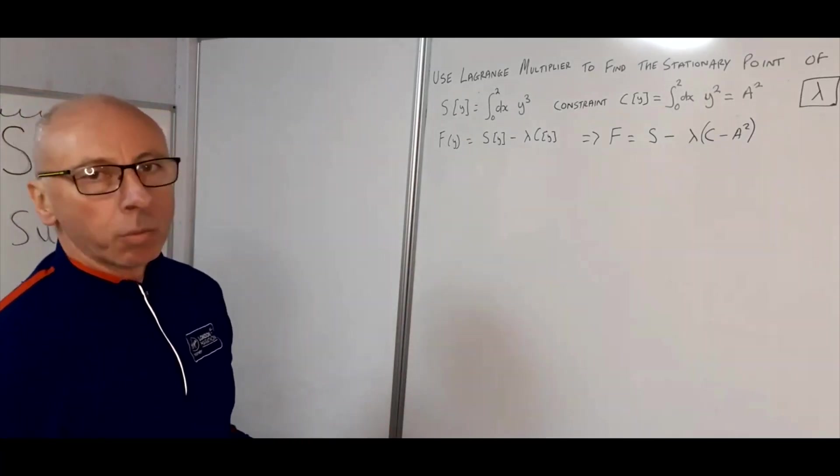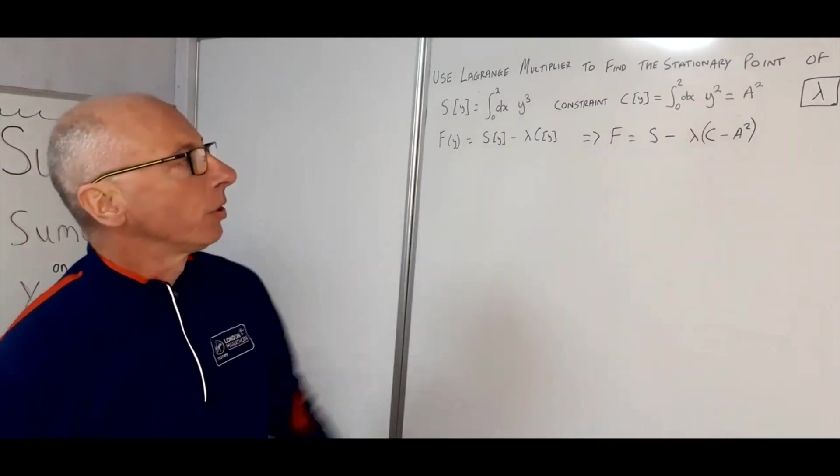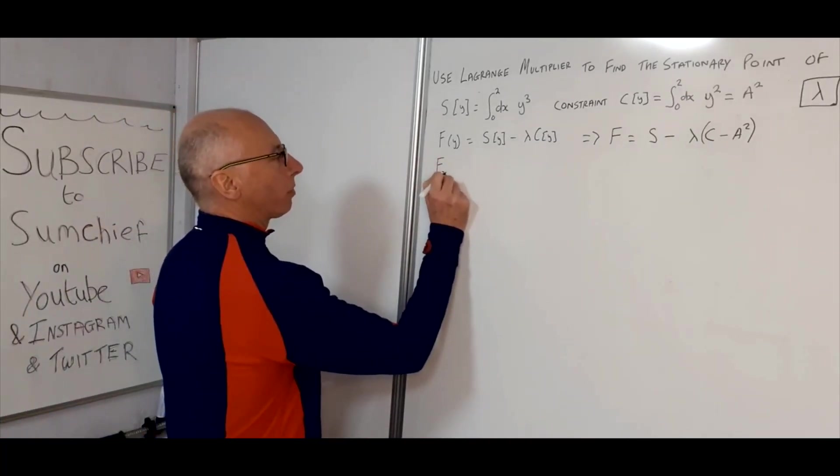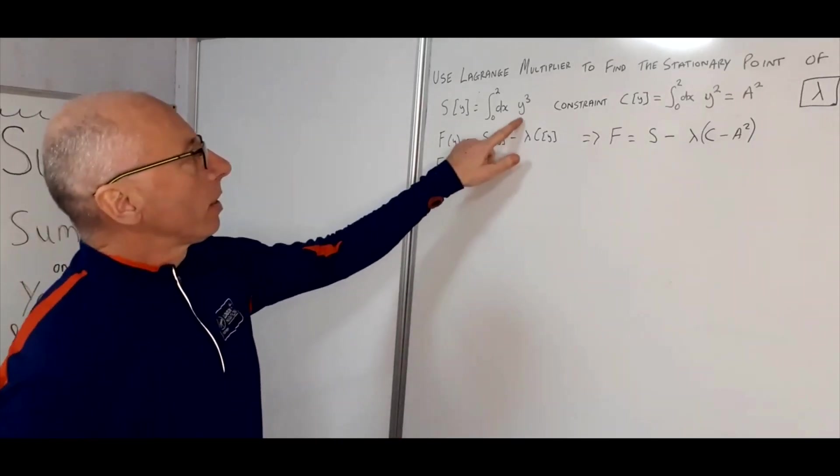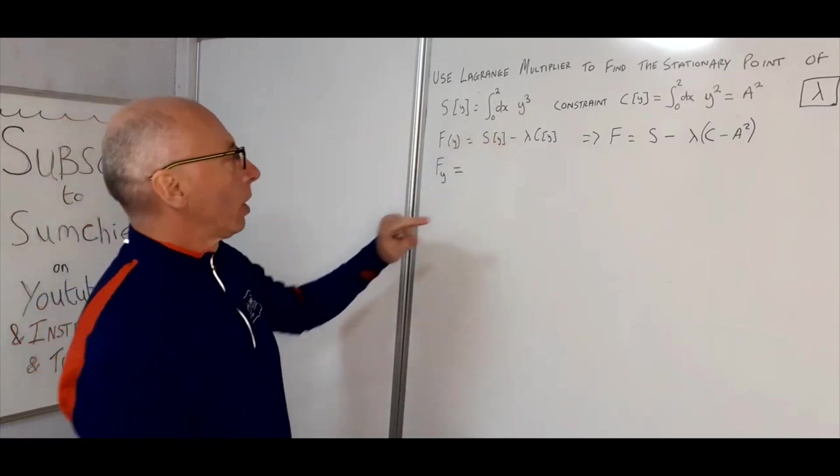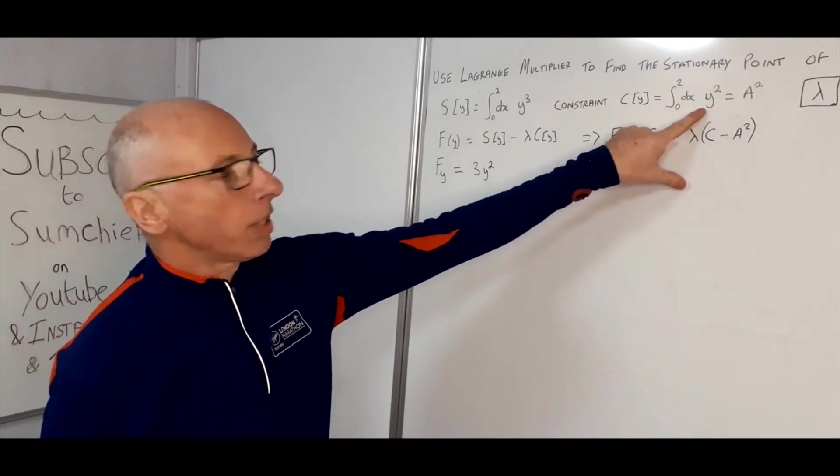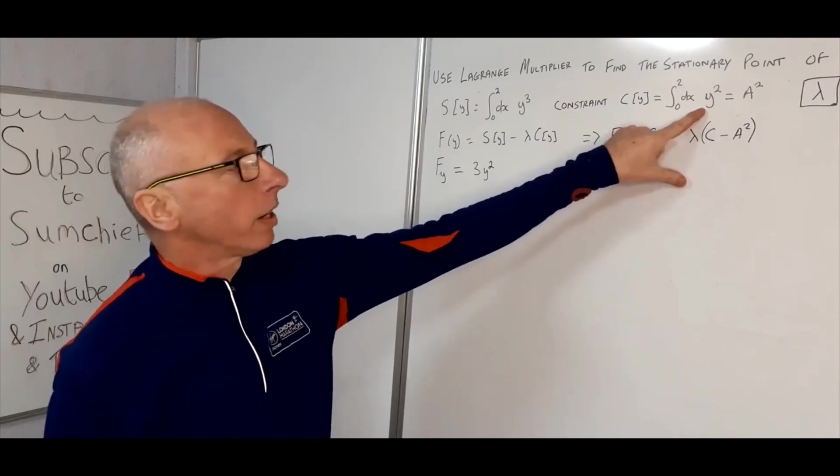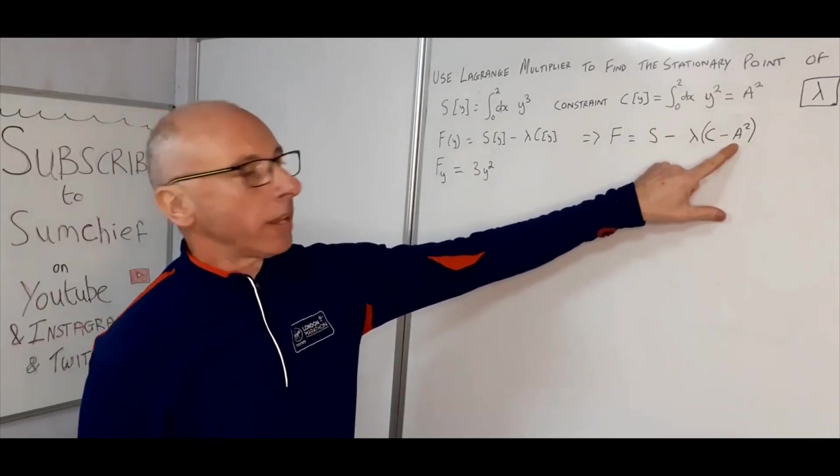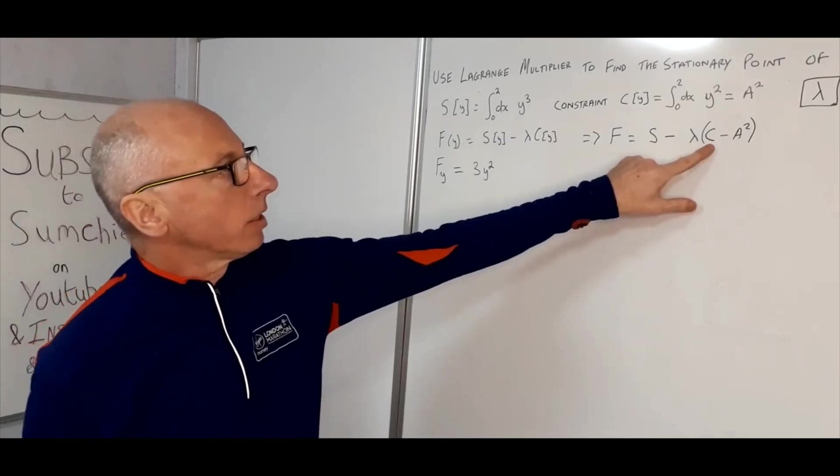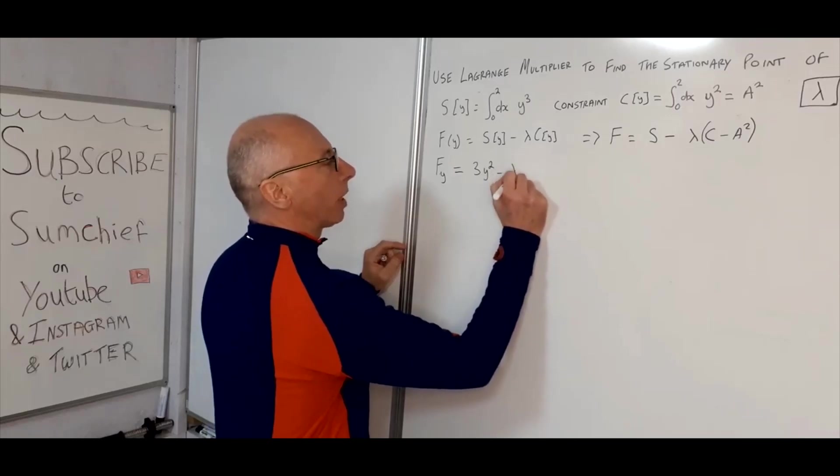So to find a stationary point first of all we want to take the derivative. Now as Y is a function of X we'll need to take the partial derivative. So the partial of F with regards to Y is derivative of Y cubed which is 3Y squared, and the partial of C which is going to be 2Y, derivative of Y squared is 2Y. And the A squared we don't need that because there's nothing to do with Y there at all. So now we have lambda times 2Y minus lambda 2Y.